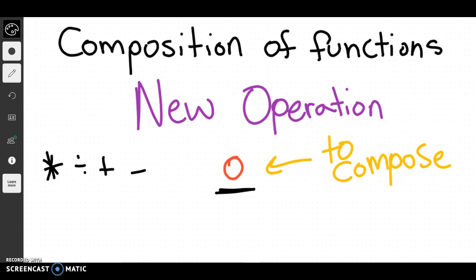You can't compose two numbers, but you can compose two functions. And so generally when we see this operation, it looks like if I take the function f and I compose it with the function g, and then I have some kind of input. It looks like the word fog a lot of times, but that's the idea behind it - we have the function f composing with the function g.